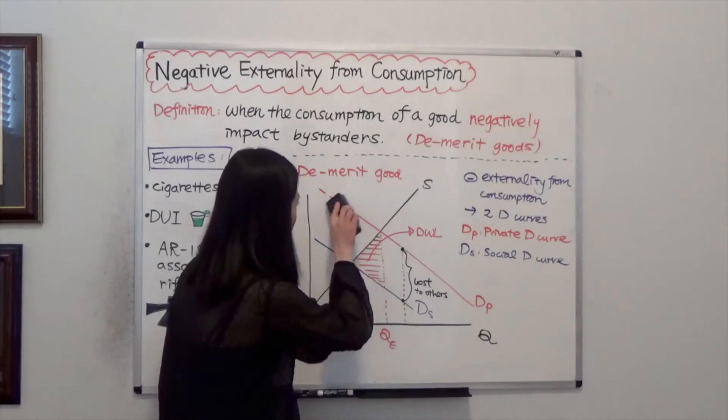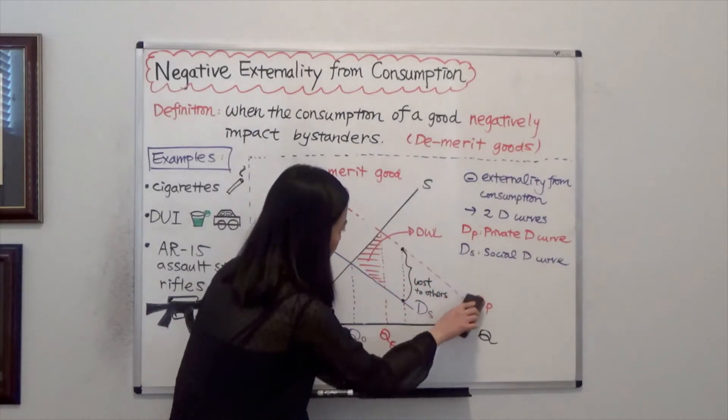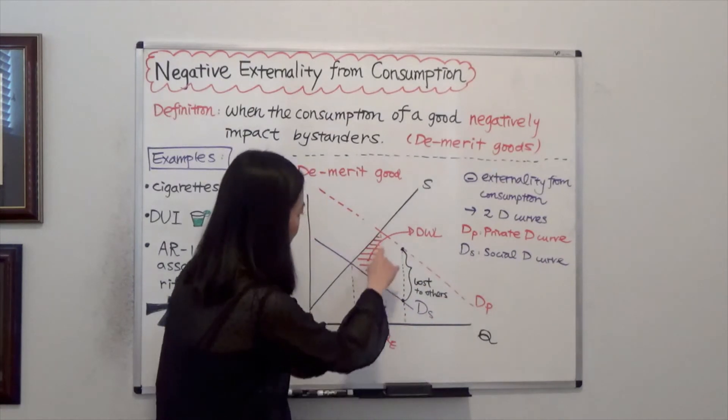And you kind of partially erase the private demand curve. Then you will be able to see the deadweight loss.